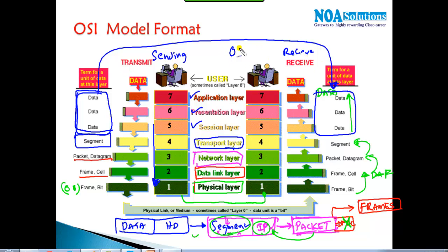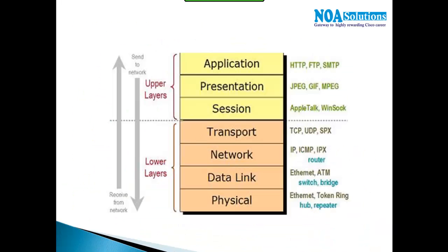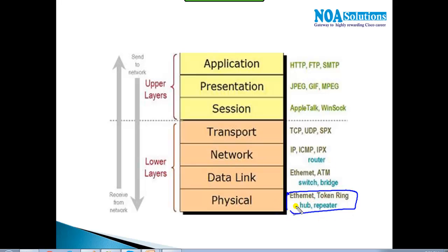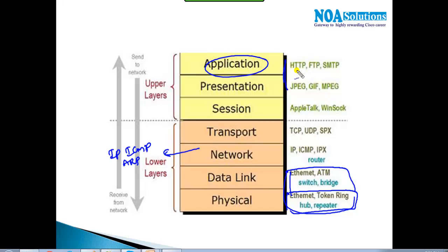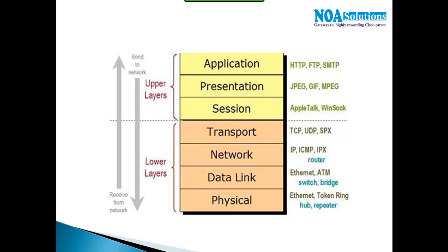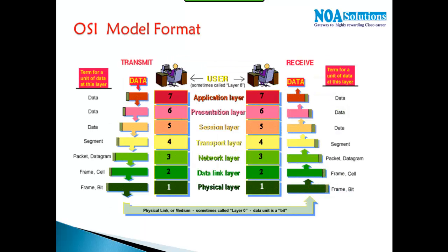When a user sends data they send it as data, and the receiver also receives it as data, but the actual transformation happens inside the network devices. This is what the OSI model defines in detail. This is the general process that happens in TCP/IP and OSI models. Some specific protocols work at the physical layer — such as Ethernet and Token Ring. IP, ICMP, and ARP protocols come under the network layer. HTTP, FTP, and SMTP come under the application layer. The presentation layer defines the format, the session layer manages sessions, and the transport layer uses TCP or UDP.